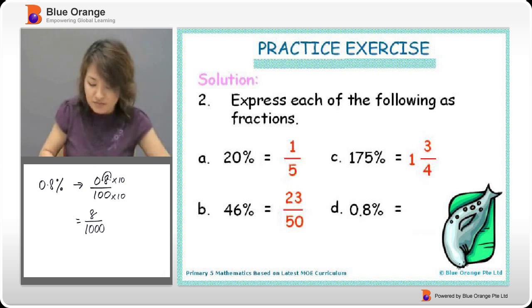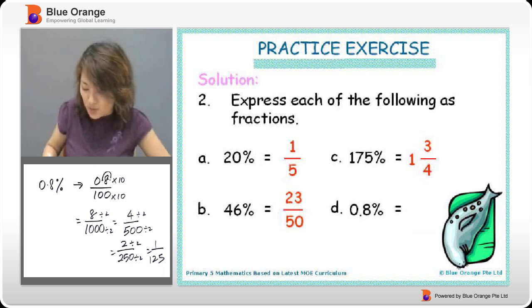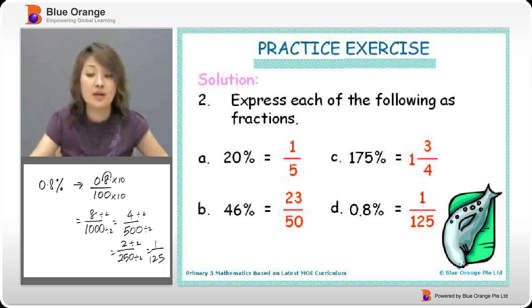And then we divide by 2. And divide by 2, we'll have 4 over 500. We can divide by 2 again, we get 2 over 250. Divide by 2, divide by 2, we get 1 over 125.